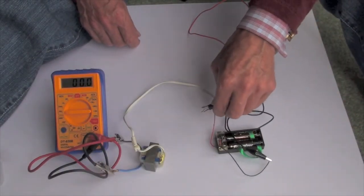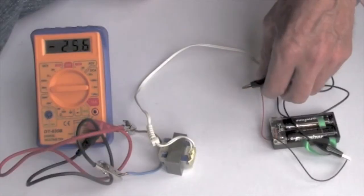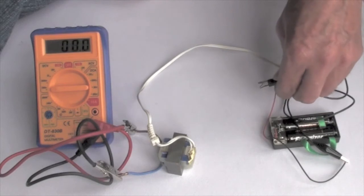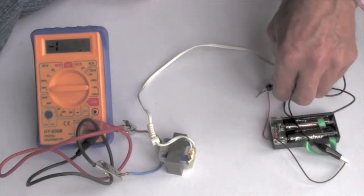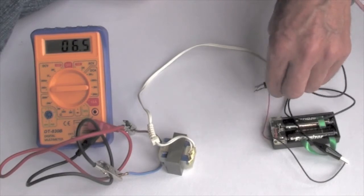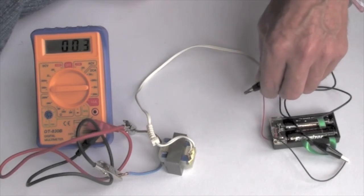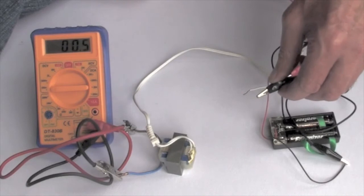If I turn the transformer around, connecting the dry cell onto what was once before the secondary coil, but now we've made it our primary coil, there are still pulses of electricity on the output on the voltmeter as I switch on and off. A transformer is a reversible machine, depending upon whether you want it to step up or step down the voltage.